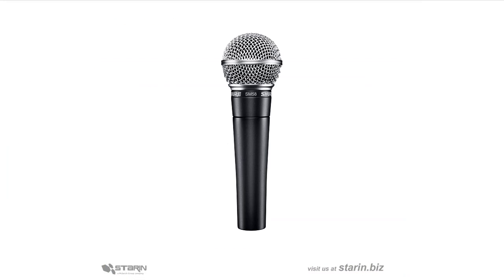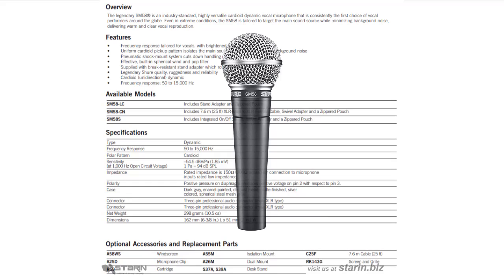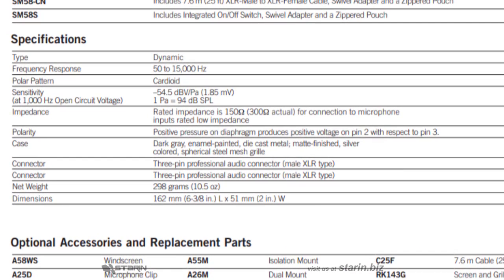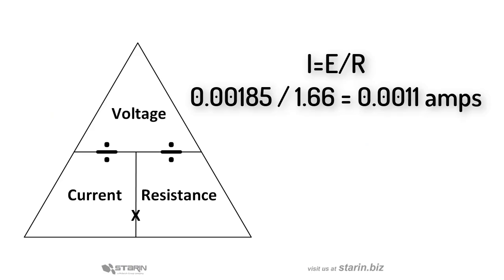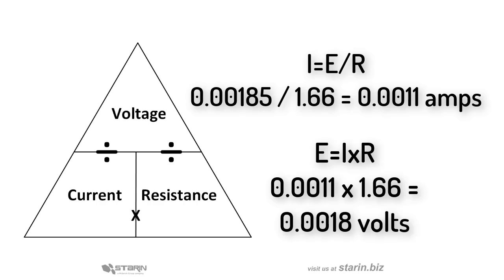After that we need to know more about the output of our source device. In the case of a popular microphone, we see the electrical output is 1.85 millivolts — that's 0.00185 volts. Using Ohm's Law, we divide 0.00185 by the resistance of our hundred-foot cable, which is 1.66 ohms. That gives us 0.0011 amps of current. We then multiply that by the cable resistance to get 0.0018 volts lost over the hundred-foot cable run — roughly only 0.024 decibels lost, which can easily be made up in the front end of a mixer or a preamp.